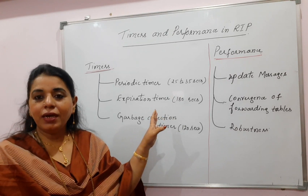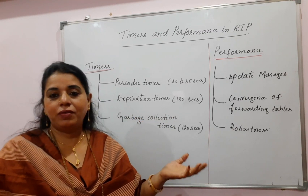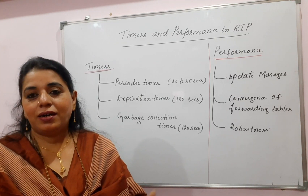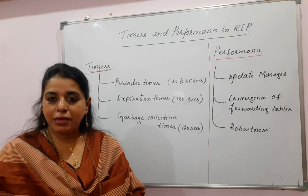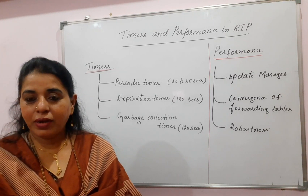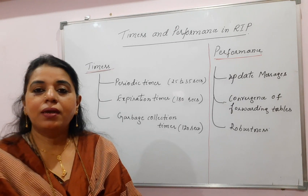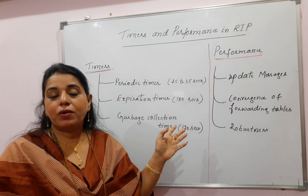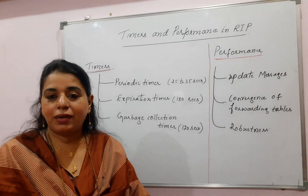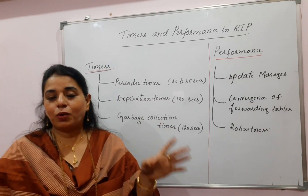This will be the last one related to distance vector routing. To learn any unicast routing protocol, we should know the algorithm used — that's why we started with distance vector routing, because RIP is based on it. We learned the distance vector routing algorithm, constructed forwarding tables using it, then looked into RIP and how to construct the initial and final forwarding tables for each router in the autonomous system, and the message format.